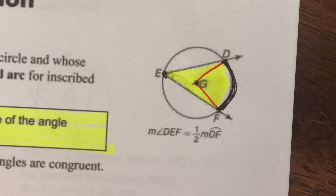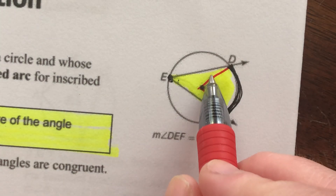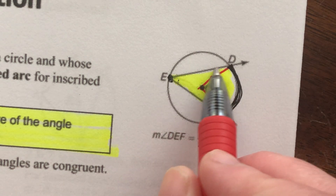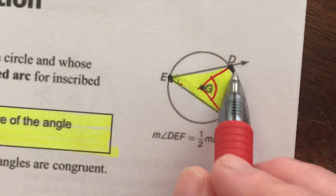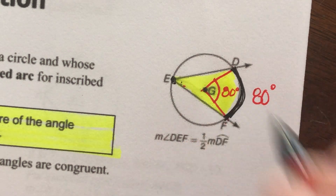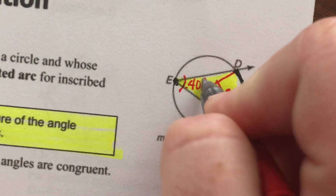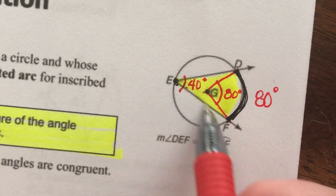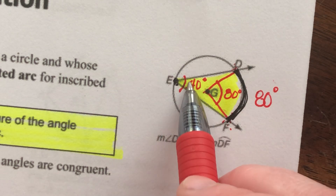If I drew two lines from D to G and F to G, that creates the central angle — whatever measure that is, the arc is the same measure. If we create a new angle stretched all the way back, it's further back and skinnier. So if this arc was 80 degrees, the central angle is 80 degrees, and the inscribed angle is 40 degrees. The intercepted arc is double the inscribed angle; the inscribed angle is half the intercepted arc. Central angle equals the arc; inscribed angle is half the arc.